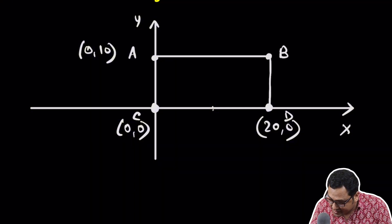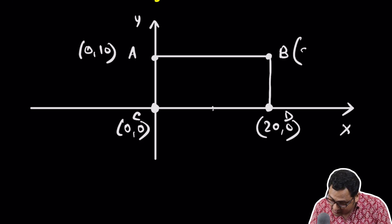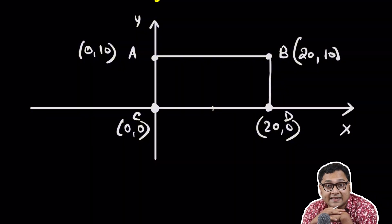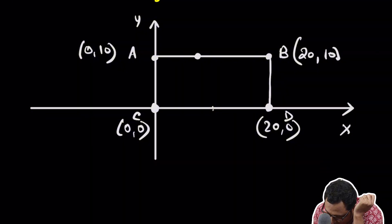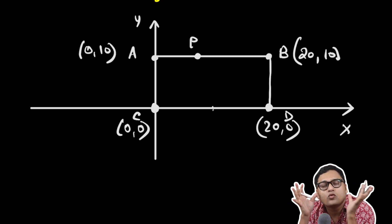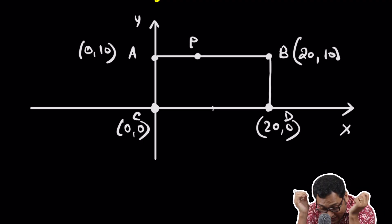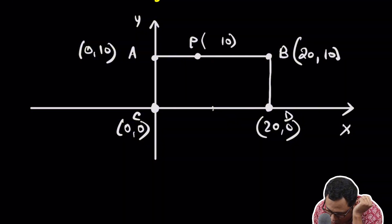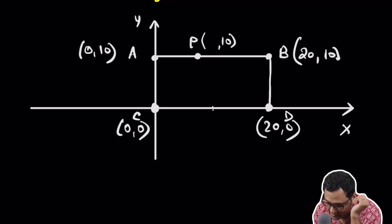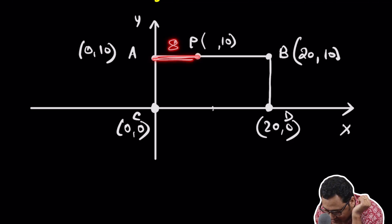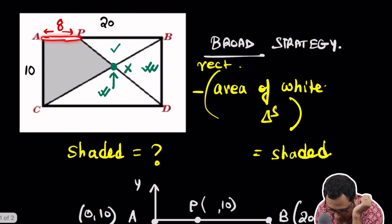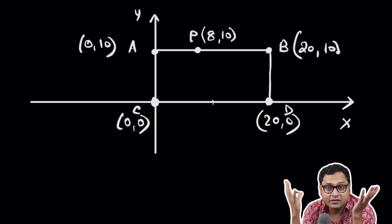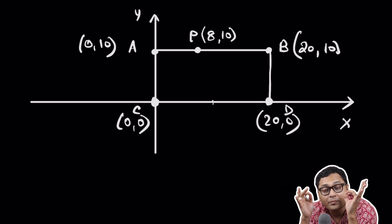And this is B, and the coordinate of this point is (20, 10). Now I'll mark the point P. What is the coordinate of point P? This height here is 10, so the Y coordinate is 10. What is the X coordinate? AP is 8, as given. So this coordinate is (8, 10). So we have the coordinate of point P.